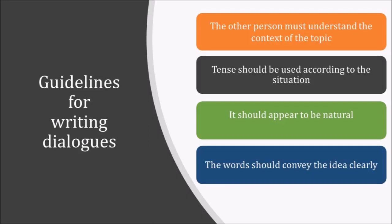Let's discuss how dialogues are written. The first thing in grammar that is essential to dialogue writing is punctuation. Commas, quotations, semicolon, period, exclamation, question marks, apostrophe — all these punctuation marks portray the dialogue and its emotions.